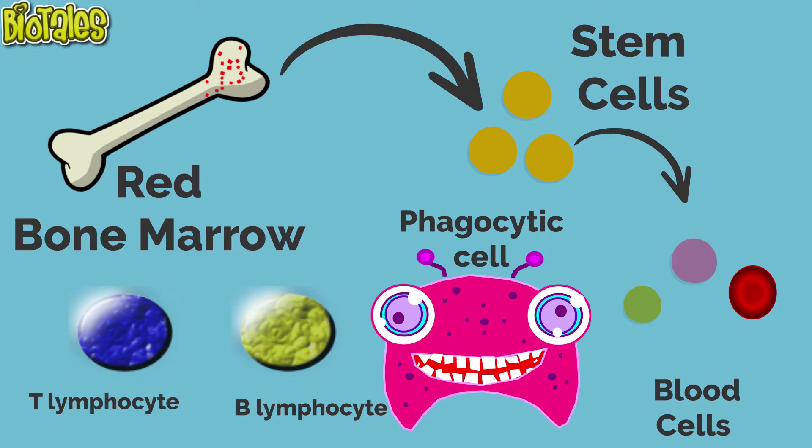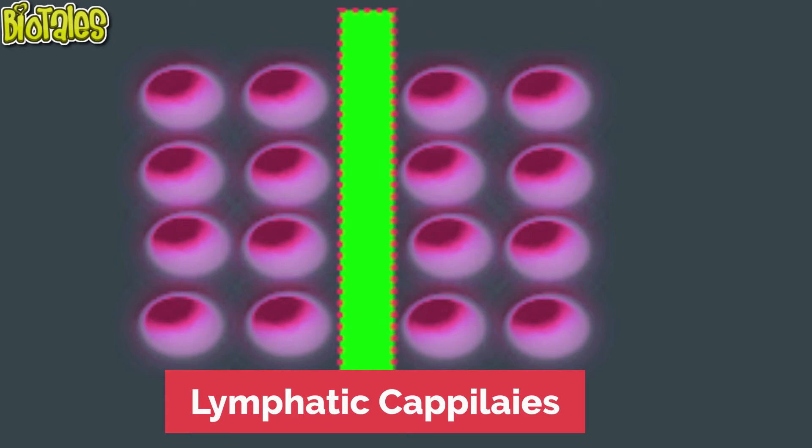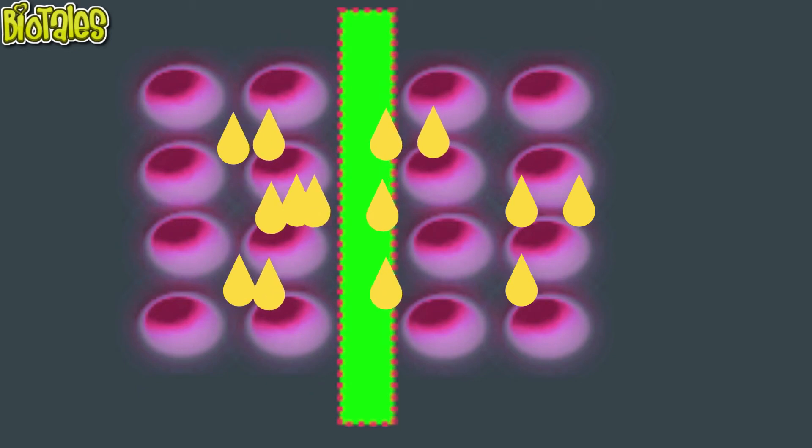Now first, let's talk about lymphatic vessels. They start as microscopic lymphatic capillaries which are located in spaces between the cells. These lymphatic capillaries allow interstitial fluid that is derived from blood plasma to flow into them, but they do not allow it to flow out.